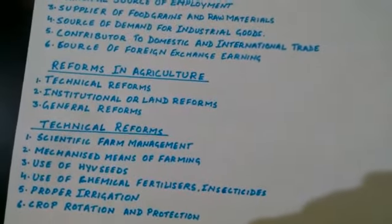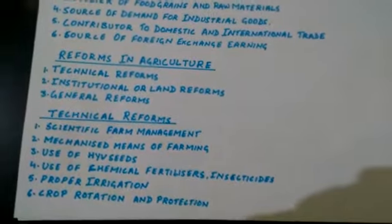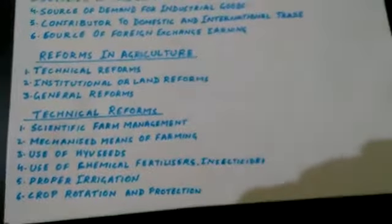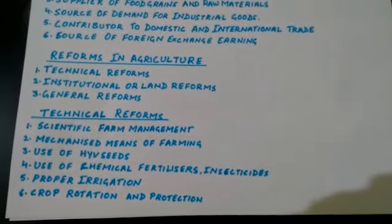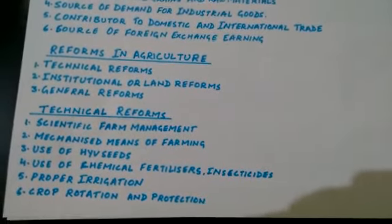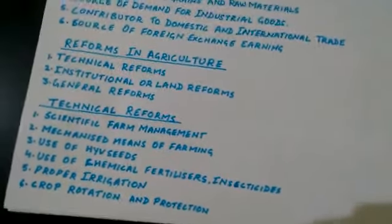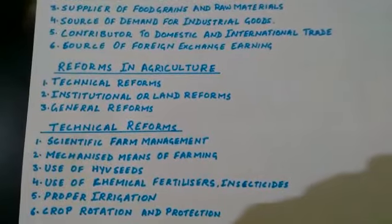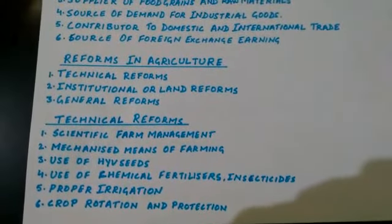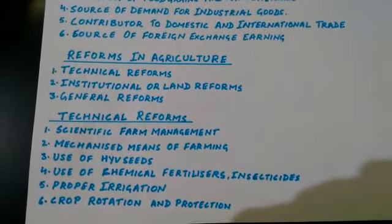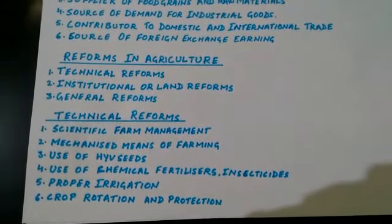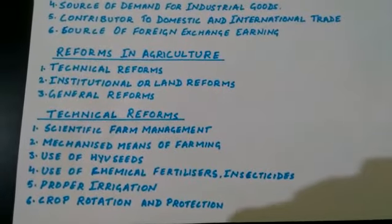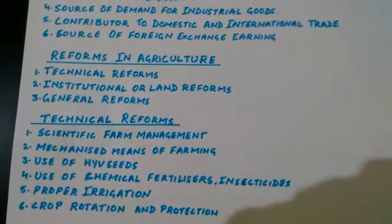Keeping this in mind, we will now study about what reforms were brought about in agriculture, or what was done to improve the condition of agriculture in India. Several reforms were introduced, included under three heads: technical reforms, institutional reforms, and general reforms.